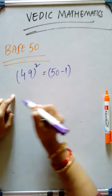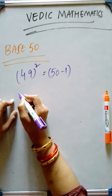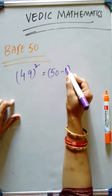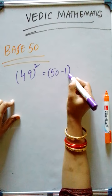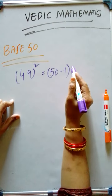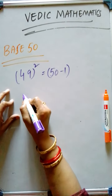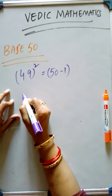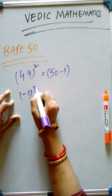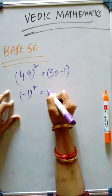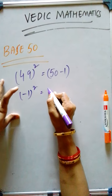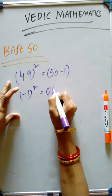Step 1, what we have to do? First of all, we have to do the square of this 1. Minus 1. Step 1, we have to do minus 1 square — nothing but minus into minus is plus. 1 square means 1. We write 0, 1.